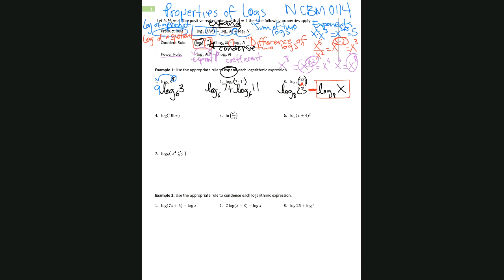For the next one, we have a common logarithm — that is a logarithm with no base written, but we know there is an implied 10. Expanding it gives log of 100 base 10. We have the product of 100 times x, so it becomes the sum of two logs: log of 100 base 10 plus log of x base 10. I can rewrite 100 as 10 squared. Since we're taking the log of 10 with the same base 10, those cancel and the answer is just the exponent 2. So this simplifies to 2 plus log of x.